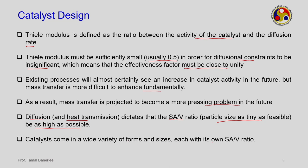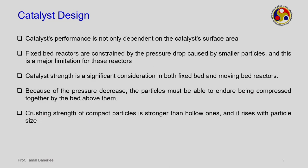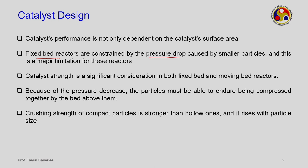Catalysts come in a wide variety of forms and sizes, each with its own SA/V ratio. However, catalyst performance depends not only on surface area — in fixed bed reactors, pressure drop also comes into play. Smaller particles cause higher pressure drop in a fixed bed reactor compared to larger particles. Particle size and SA/V ratio are inversely proportional, and SA/V is inversely proportional to pressure drop: smaller particles give higher pressure drop, larger particles give lower pressure drop.